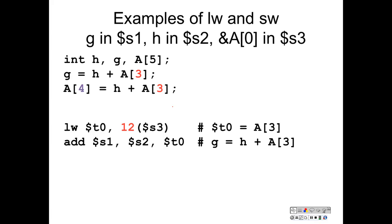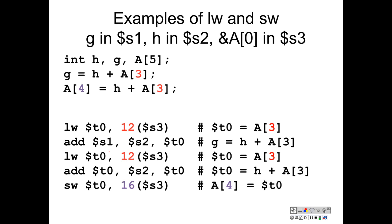The next high-level language instruction is A[4] equals h plus A[3]. Here we re-read A[3] and re-add it to h — these two instructions are actually redundant. In a future video I'll discuss removing these redundant instructions to save execution time. The assignment of h plus A[3] into A[4] is accomplished by doing a store word of the calculated value out to the index 16 offset from the base address $s3. Again, 16 equals 4 times 4, placing it 16 bytes from the start of A, which is the location of A[4].